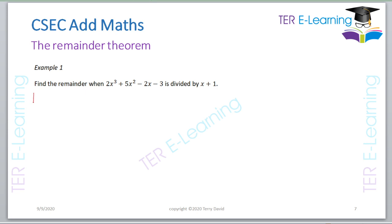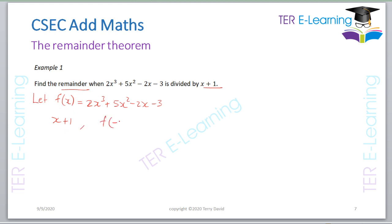There are two ways we can work this question. The first way: let f(x) equal the polynomial, which in this case is 2x³ + 5x² − 2x − 3. The question asks for the remainder when divided by (x + 1). My divisor is (x + 1), so according to the Remainder Theorem I really need to find f(−1). That's what I need to work out — it will give me my remainder.